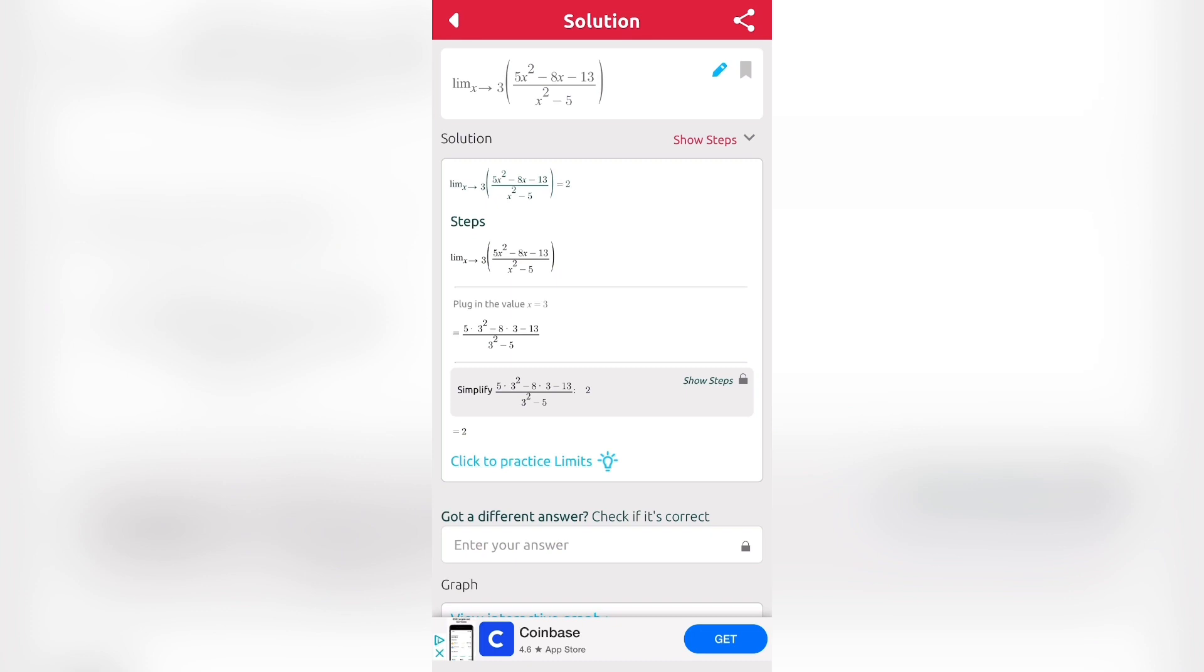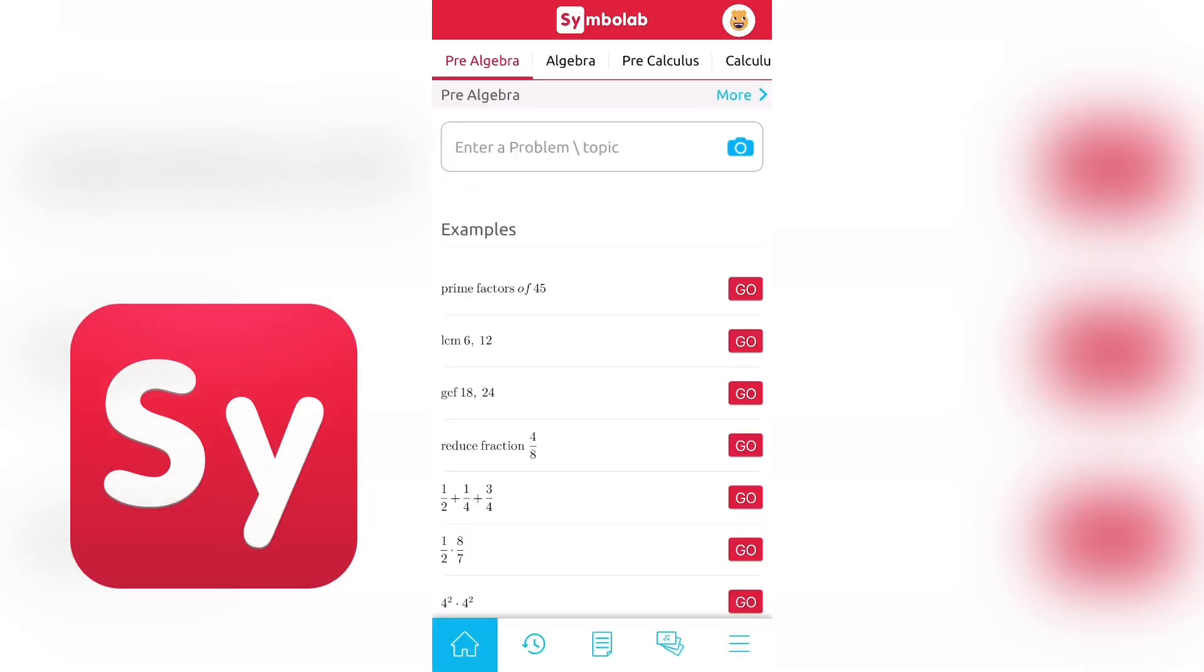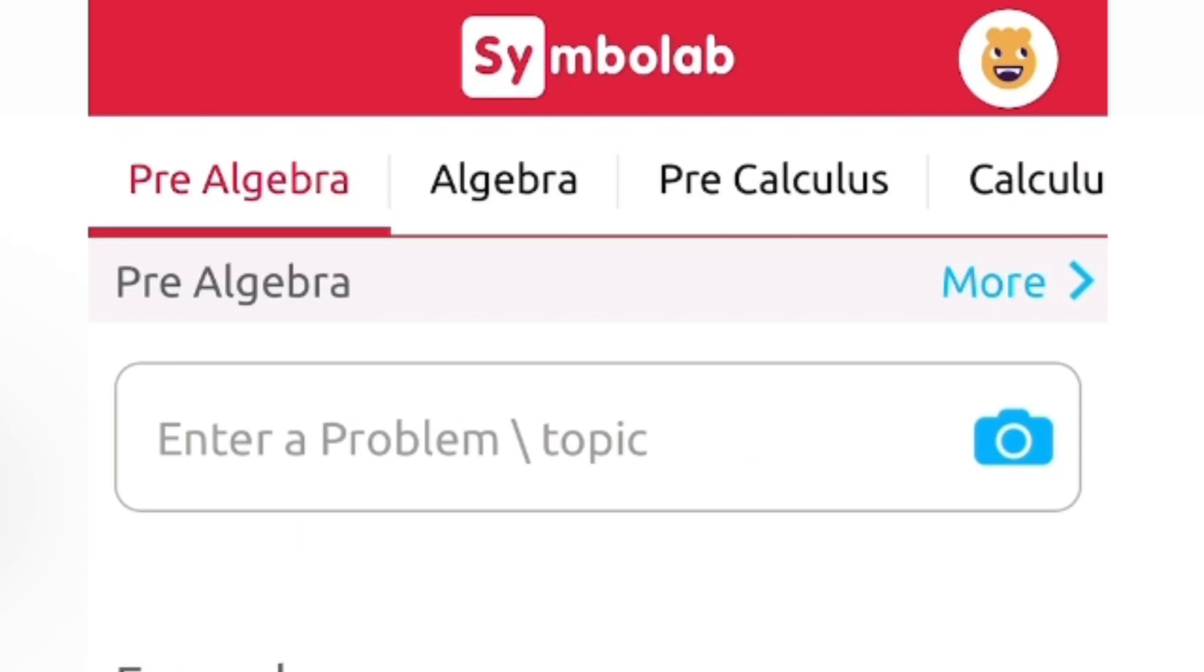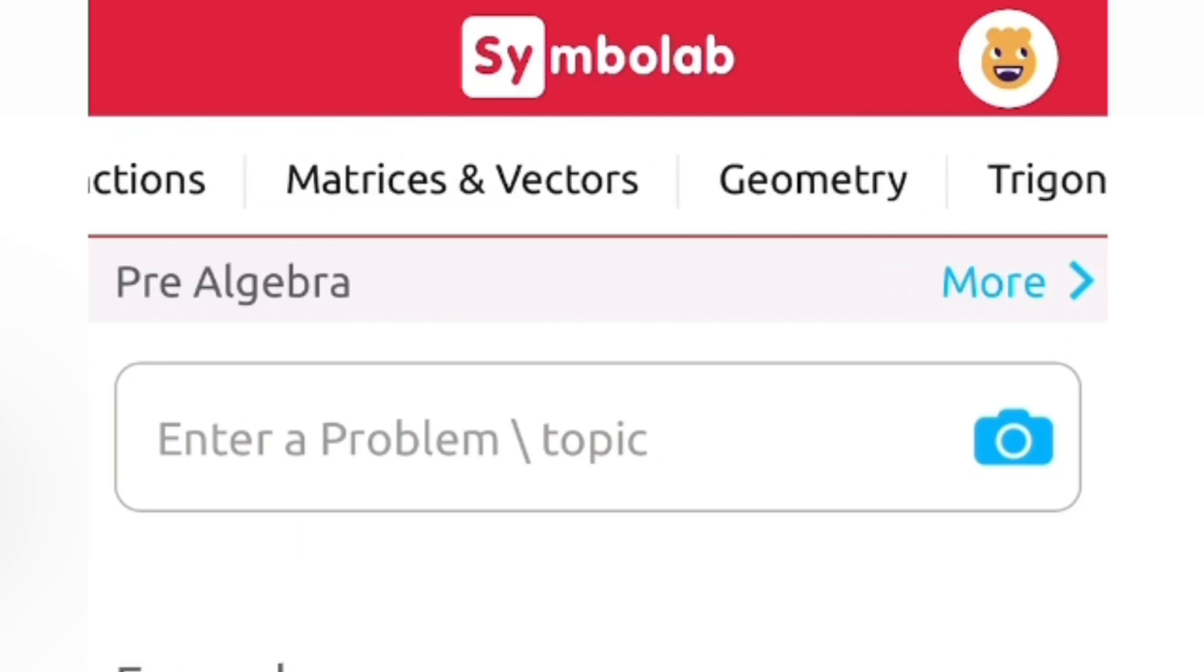So this app over here is called Symbolab. Basically what this app does is that it's an advanced math calculator that can solve different topics in math. For example, at the top over here, you can solve topics in pre-algebra, algebra, pre-calculus, and all the way here.